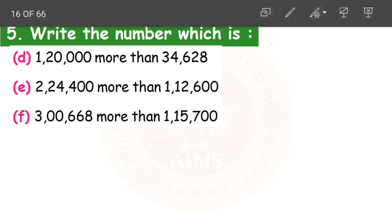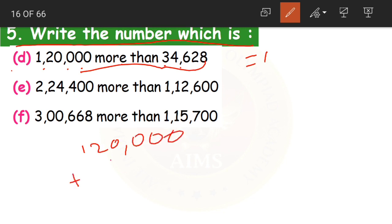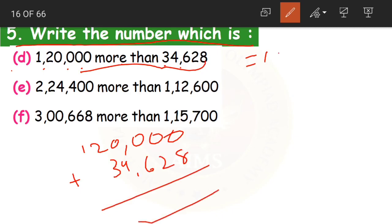Now moving on to our last homework problem — write the number which is one lakh twenty thousand more than thirty-four thousand six hundred and twenty-eight. How do we find this? One lakh twenty thousand plus thirty-four thousand six hundred and twenty-eight. When we add these two, the answer will be one lakh fifty-four thousand six hundred and twenty-eight.